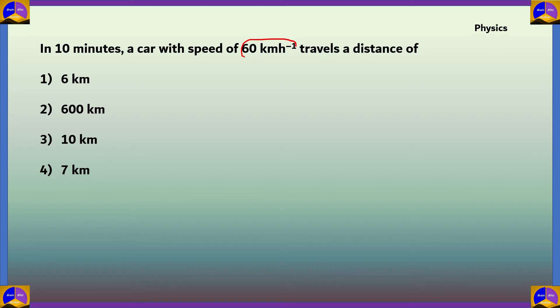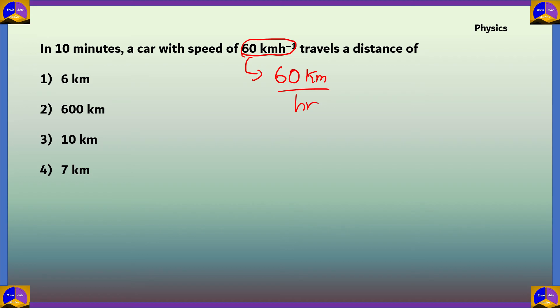60 kilometer hour raised to minus 1 means 60 kilometers per hour — it's another way of writing km/h. That is the speed of the car. We have to find the distance traveled by the car if it travels for 10 minutes at a uniform speed. Let's name the distance as x.